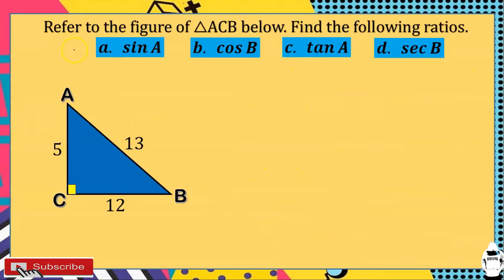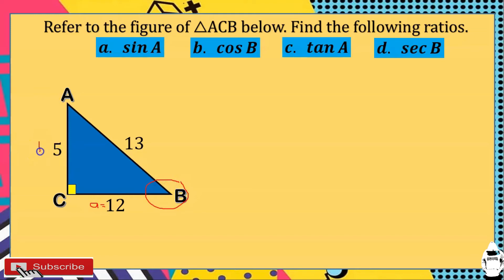Now let's have an example. Refer to the figure of right triangle ACB and find the following ratios: sine A, cosine B, tangent A, and secant B. Based from this right triangle, the measurements are: AC is equal to 5, AB is equal to 13, and CB is equal to 12. Angle A's opposite side is side a, angle B's opposite side is side b, and the right angle's opposite side is side c.